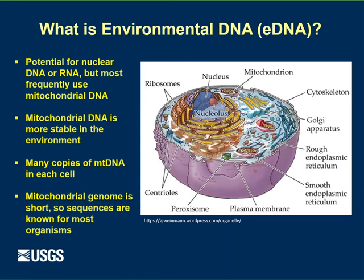Because of that, we have the mitochondrial genome sequences known for very many species on the planet. And because we have that sequence known, that's what we need to compare to in making our species identification. If we don't know the sequence, then we can't detect that organism because we don't know what we're comparing it to.